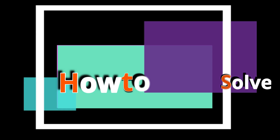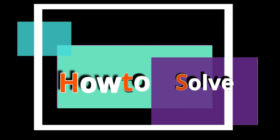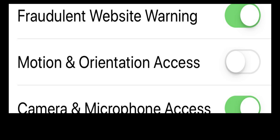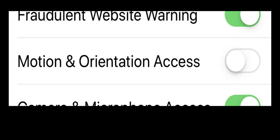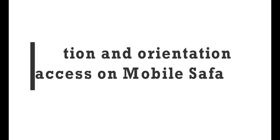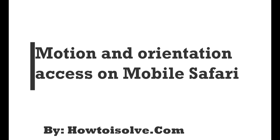You're on the howtosolve.com YouTube channel. I'm going to show you Apple's new Safari setting called Motion and Orientation Access, which is turned off by default. This is why accelerometer and gyroscope access is limited in mobile Safari on iOS 12.2, for privacy reasons.